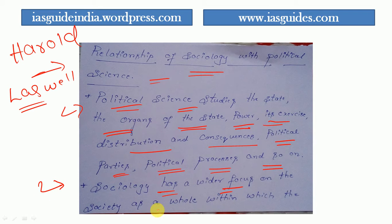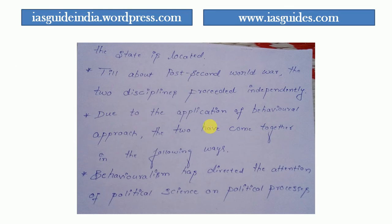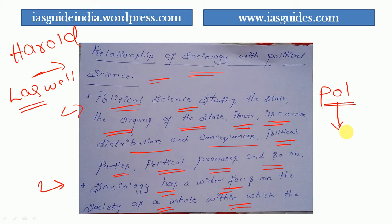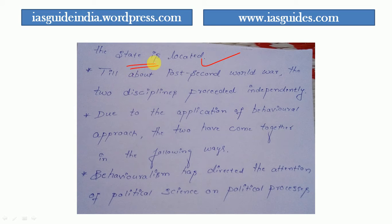Sociology has a wider focus on society as a whole, within which the state is located. Political science always talks about the government, which is also called the state. The state is a political science concept. Sociology, however, is wider — it studies the state as just one subject within it. So political science is narrower in its scope whereas sociology is wider.